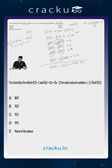So the sum of 1 plus 2 plus dot dot dot till 31 is equal to 31 times 32 divided by 2, which is equal to 31 times 16, which equals 496.